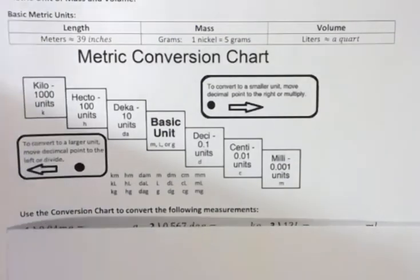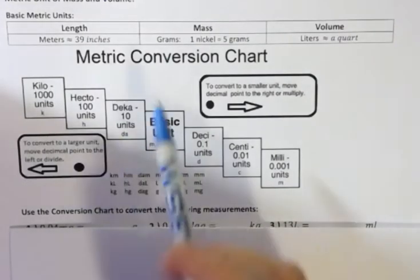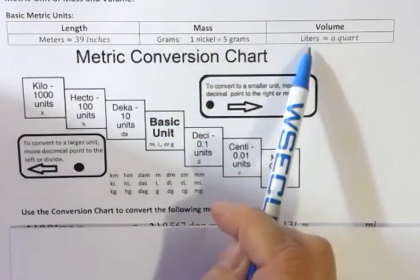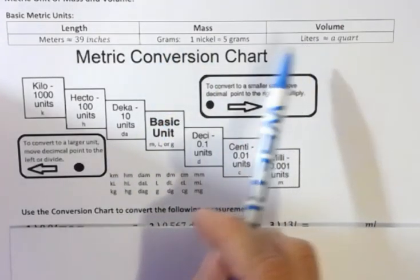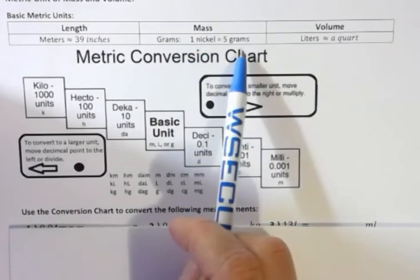Hi, I'm Carly McEvoy talking about metric units. In this video I'm talking about mass and volume. For mass we use grams, and for volume we use liters.